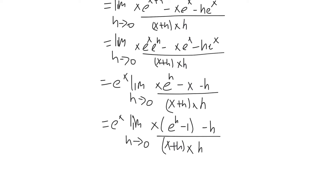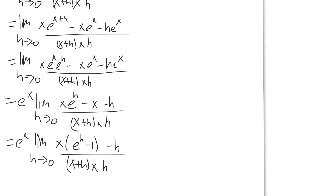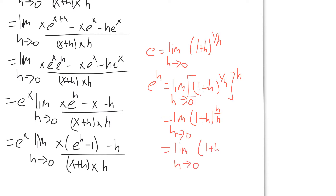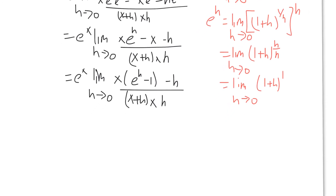At this point, it's a good idea to work with the limit definition of e. Remember, e equals the limit as h approaches 0 of 1 plus h to the power of 1 over h. Since we have e to the h, we raise that to the h power: 1 plus h to the 1 over h, raised to the h. Using the power-to-a-power rule, you multiply the exponents, giving 1 plus h to the power of 1, which is just 1 plus h. So we replace e to the h with 1 plus h.